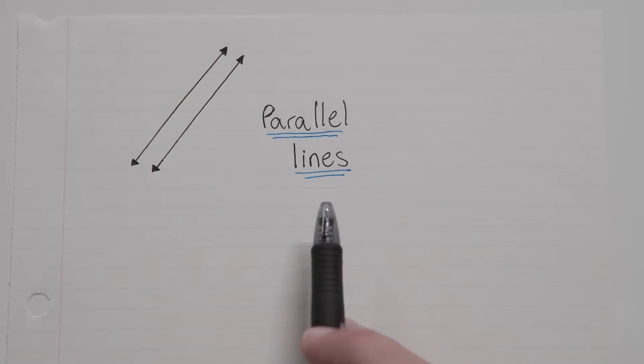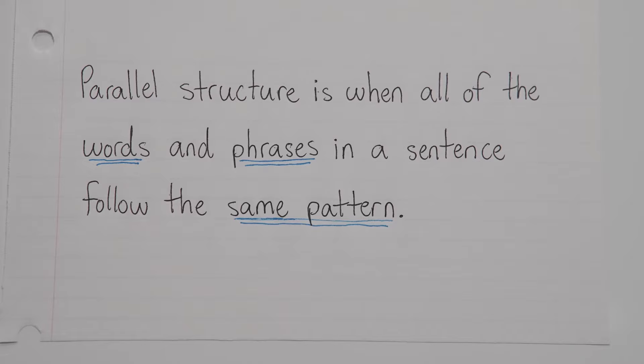So when you hear the word parallel, you probably think of math, right? Like parallel lines. And the concept here is actually kind of the same. In math, two lines that are parallel are two lines that follow the same path without touching and pretty much look the same. And believe it or not, that's basically the same way it works with grammar. Parallel structure is when all of the words and phrases in a sentence follow the same pattern. They're written in the same way.